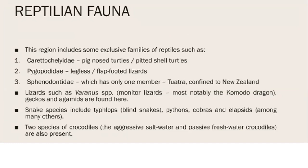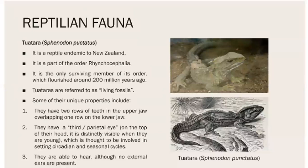The reptilian fauna includes some exclusive families, such as Carettochelyidae (pig-nosed turtle) and legless flap-footed lizards. Importantly, the family Sphenodontidae, which includes the Tuatara, is confined to New Zealand. There are also many lizards including the Komodo dragon — the largest lizard in the world — as well as snakes and two species of crocodiles.